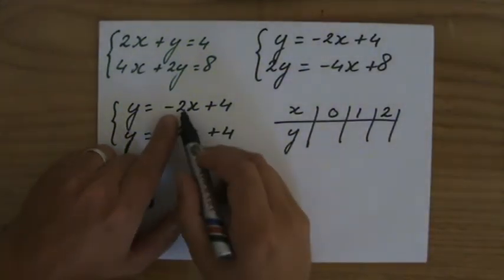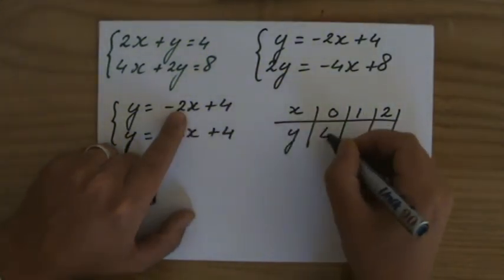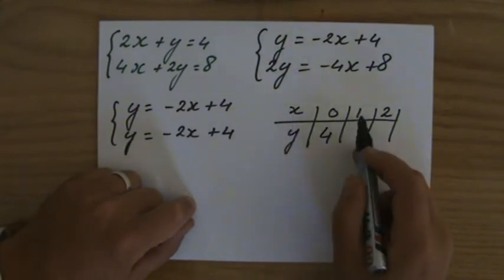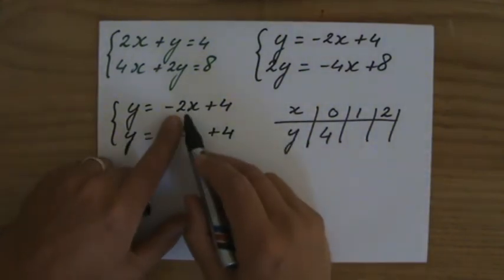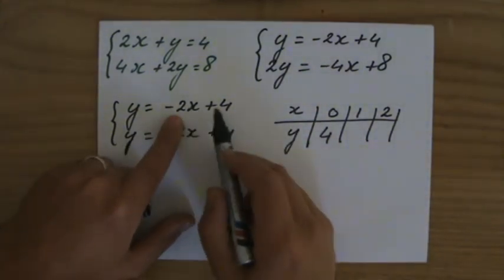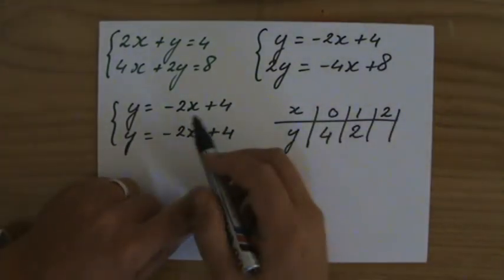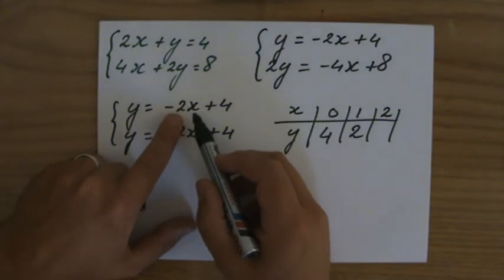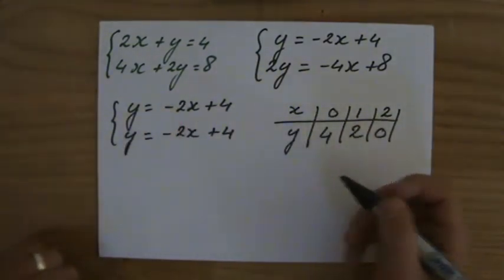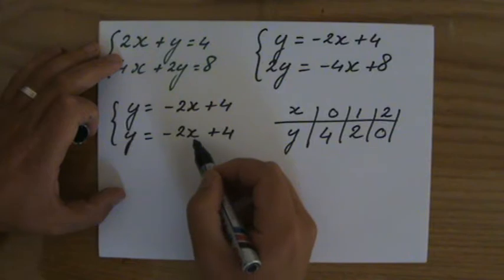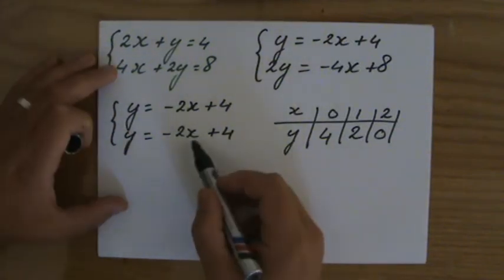Let's do 0, 1, 2. When x is 0, y is 0 plus 4, which is 4. When x is 1, y is minus 2 times 1, that's minus 2 plus 4, which is 2. When x is 2, y is minus 2 times 2, that's minus 4 plus 4, which is 0.